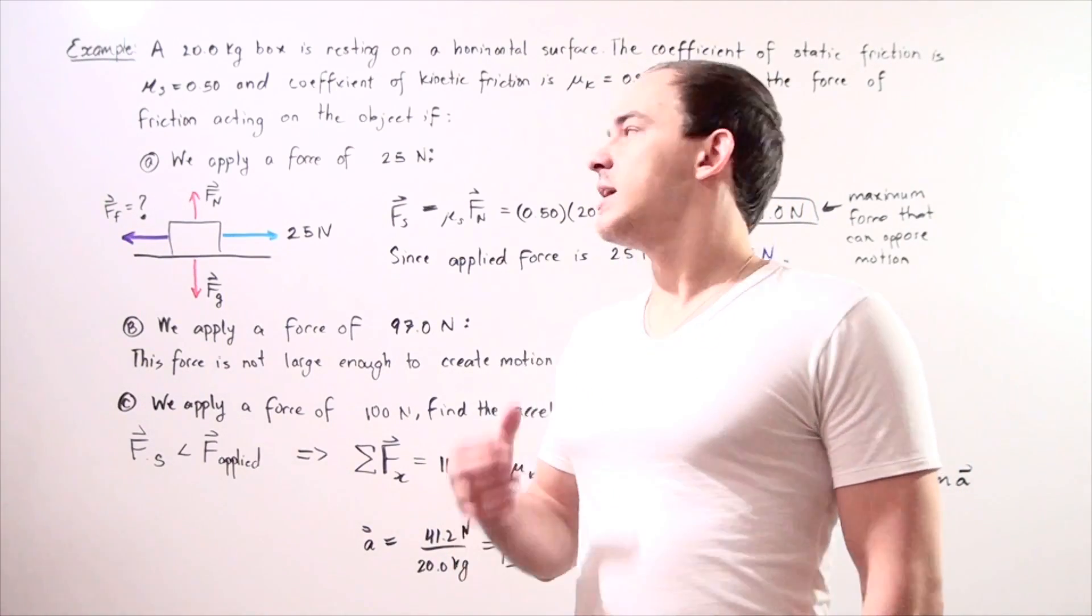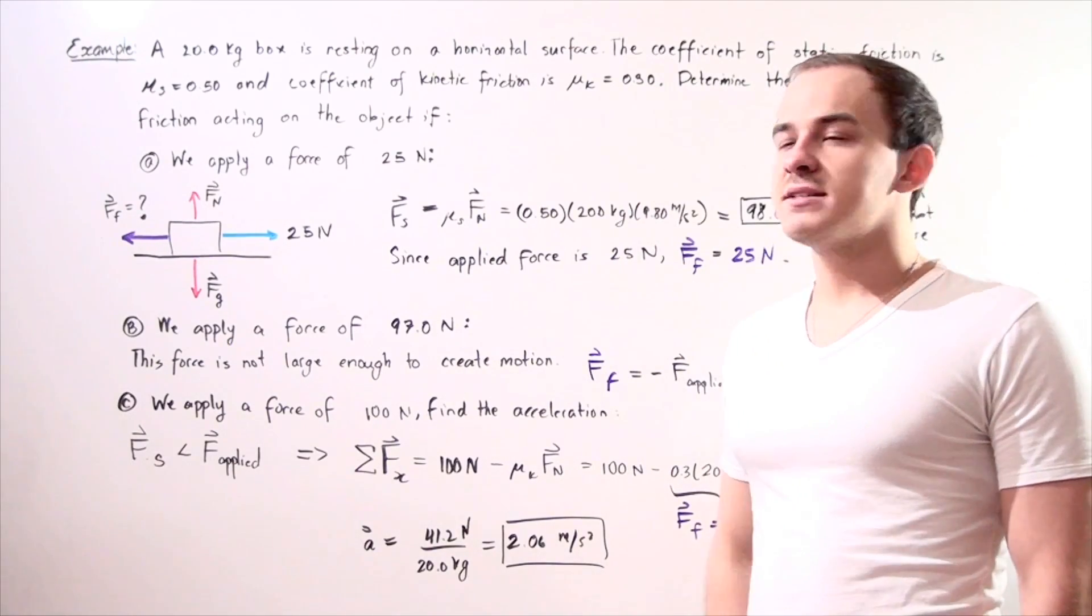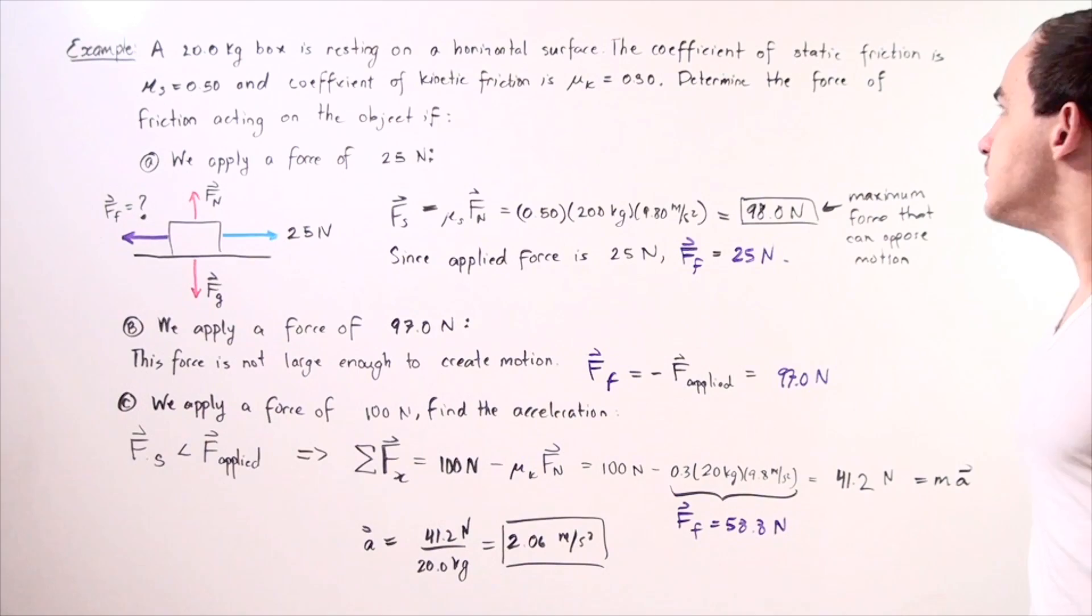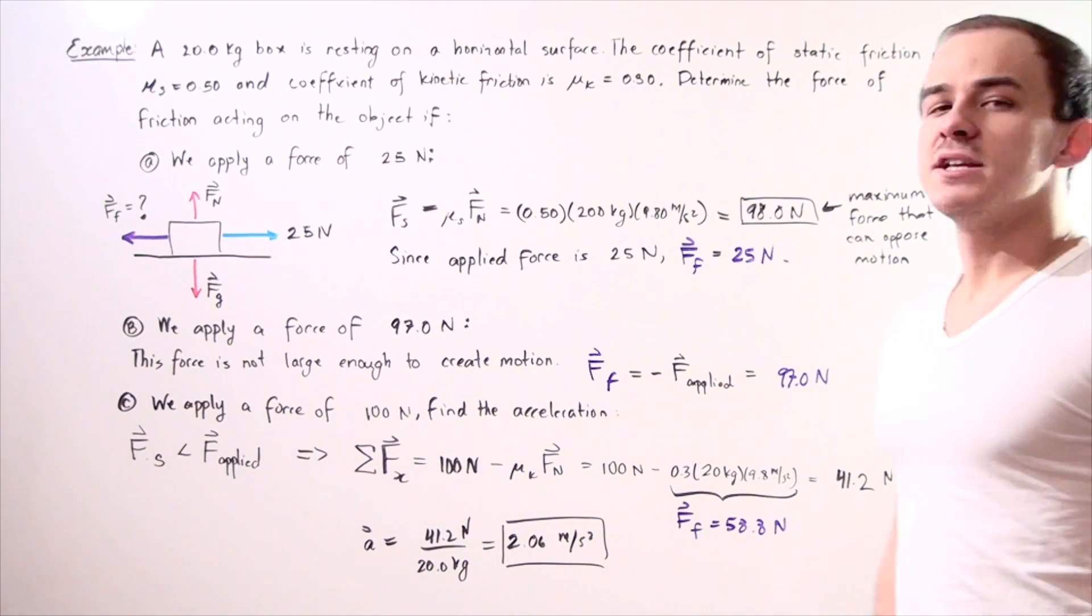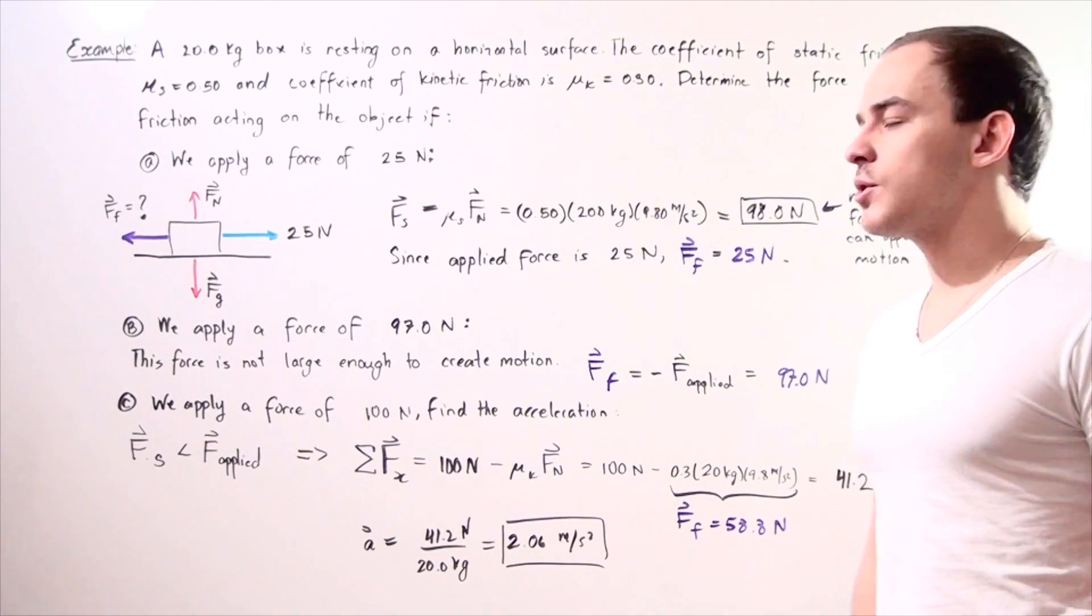Let's do an example that deals with static and kinetic friction. A 20 kilogram box is resting on a horizontal surface. The coefficient of static friction is 0.5 and the coefficient of kinetic friction is 0.3.